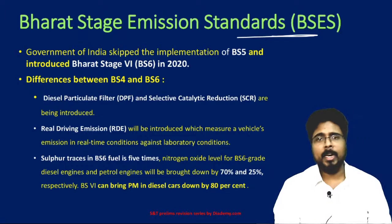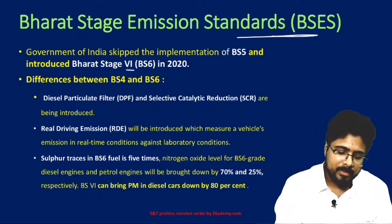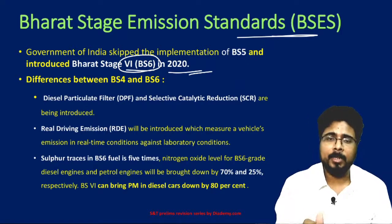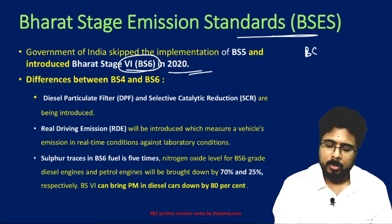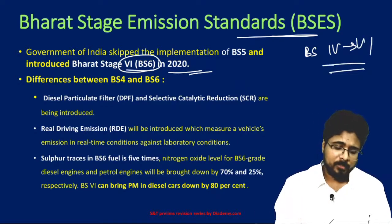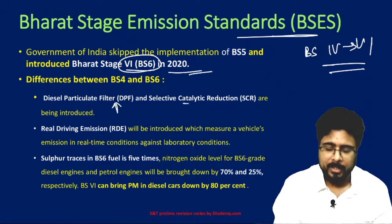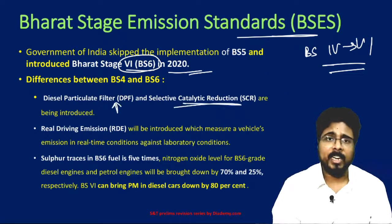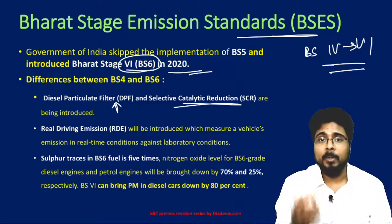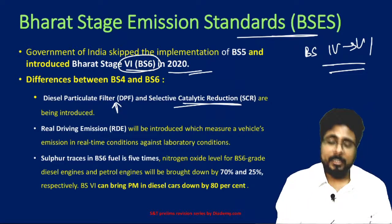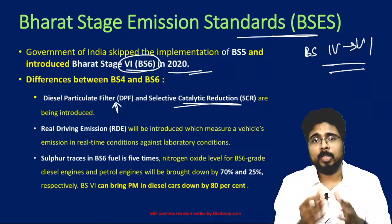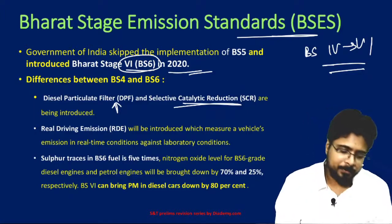Next, Bharat Stage emission standards. India has skipped the BS 5 stage and recently in 2020 introduced BS 6 standards — moving directly from BS 4 to BS 6. The difference between BS 4 and BS 6 is huge. BS 6 engines have a diesel particulate filter and selective catalytic reduction, meaning the diesel emission will be more filtered, and selective catalytic reduction reduces the output fumes using catalytic reduction.